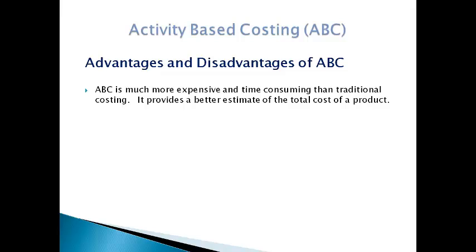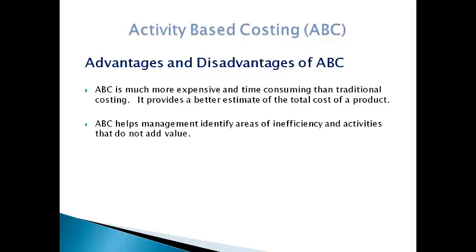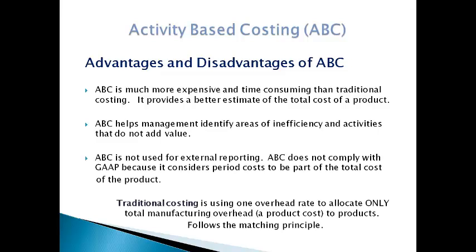Activity-based costing requires a lot of time and effort to gather the data related to each cost pool and each activity. It is much more costly than traditional costing. Detailing out the flow of activities that occur often uncovers inefficiencies that are buried in the processes. Activity-based costing allocates cost to each product; however, the total cost per unit is not used to determine the cost of goods sold for the income statement because it is a mixture of product and period cost, and this is not in accordance with GAAP and the matching principle. Traditional costing follows the matching principle.